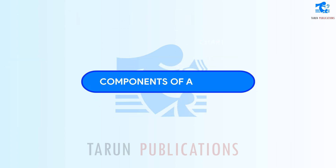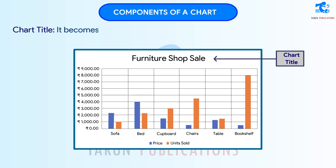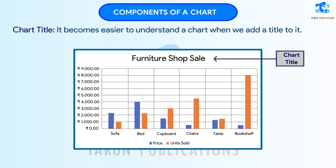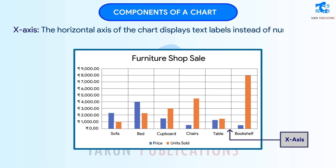Components of a Chart. Chart Title: It becomes easier to understand a chart when we add a title to it. X-Axis: The horizontal axis of the chart displays text labels instead of numeric intervals. It is also known as Category Axis.